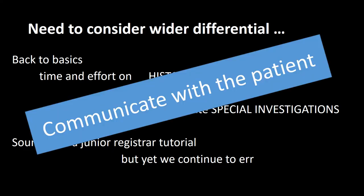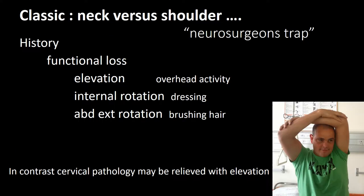We need to communicate with the patient to understand what the problem is. The commonest confuser is neck versus shoulder pathology. Orthopedic surgeons are more familiar with shoulder pathology, but neurosurgeons have not been trained in this area. One can identify shoulder pathology from history where there is functional loss, generally with reduced elevation and problems with overhead activity. They struggle with internal rotation such as dressing, clipping a bra, tucking a shirt in, and activities involving abduction and external rotation such as brushing your hair.